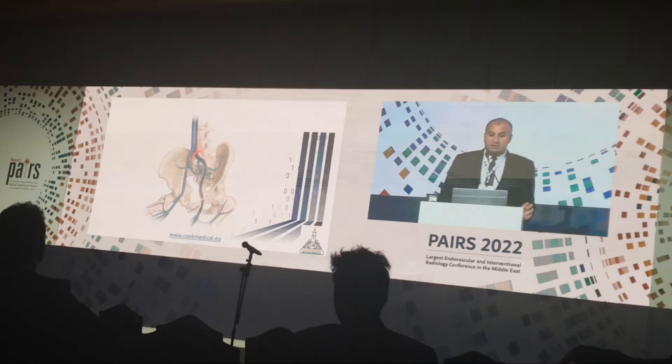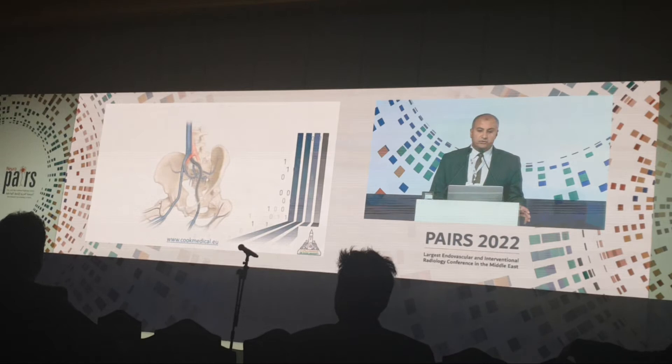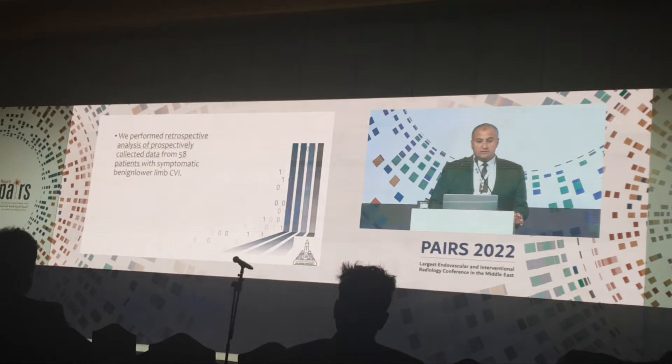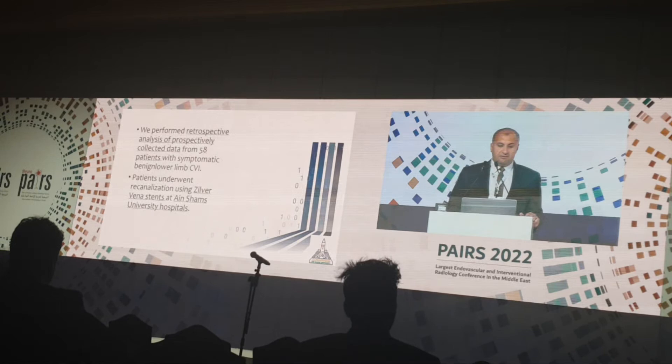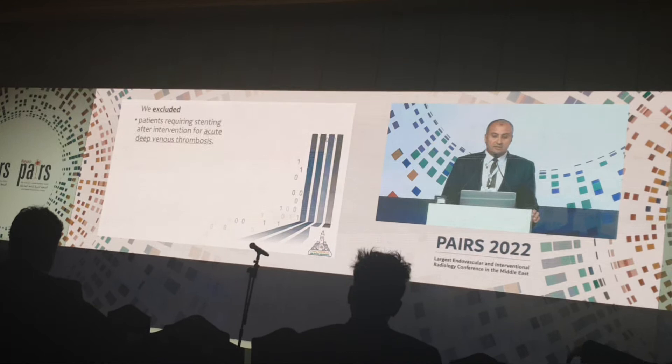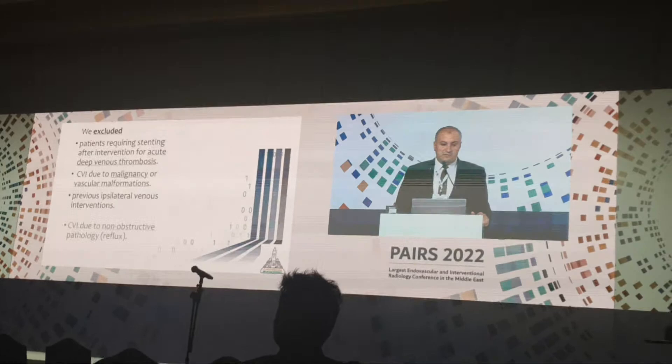This is the actual anatomy of the iliac veins — it is not straight veins; as you can see on the angiogram, they are tortuous by nature. Our method was a retrospective analysis of prospective data collected from 58 patients with symptomatic benign lower limb chronic venous insufficiency, who underwent recanalization using Zilver Vena stents in Ain Shams University hospitals. We excluded patients requiring anticoagulation after intervention for recurrent venous thrombosis, chronic venous insufficiency due to malignancy or vascular malformation, previous ipsilateral venous interventions, and chronic venous insufficiency due to non-obstructive pathology (reflux).